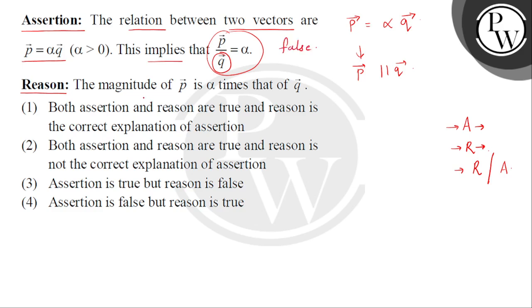Now let's check the reason. The magnitude of p⃗ is α times that of q⃗. This statement is correct, which tells us that p⃗ and q⃗ are parallel to each other.